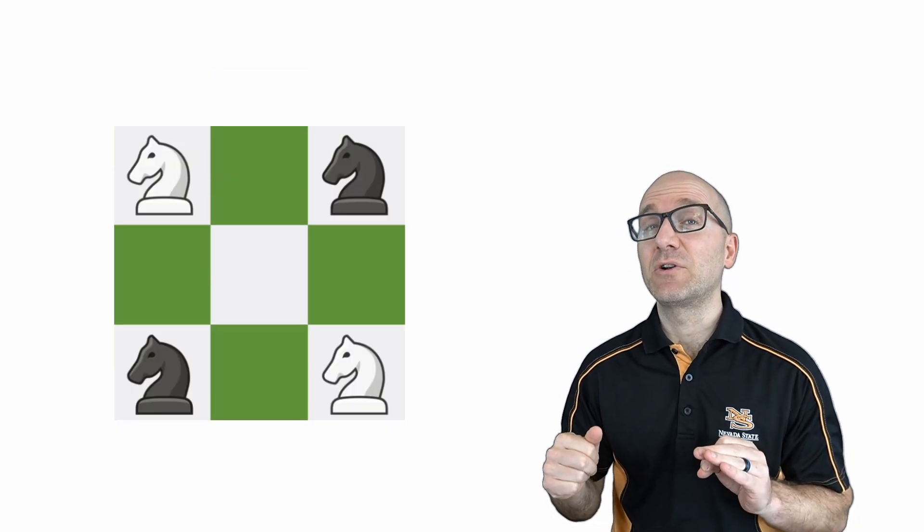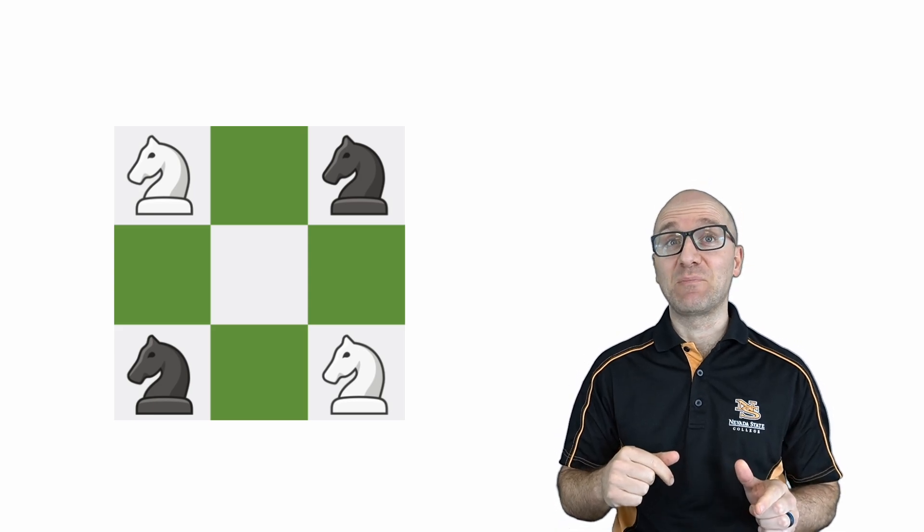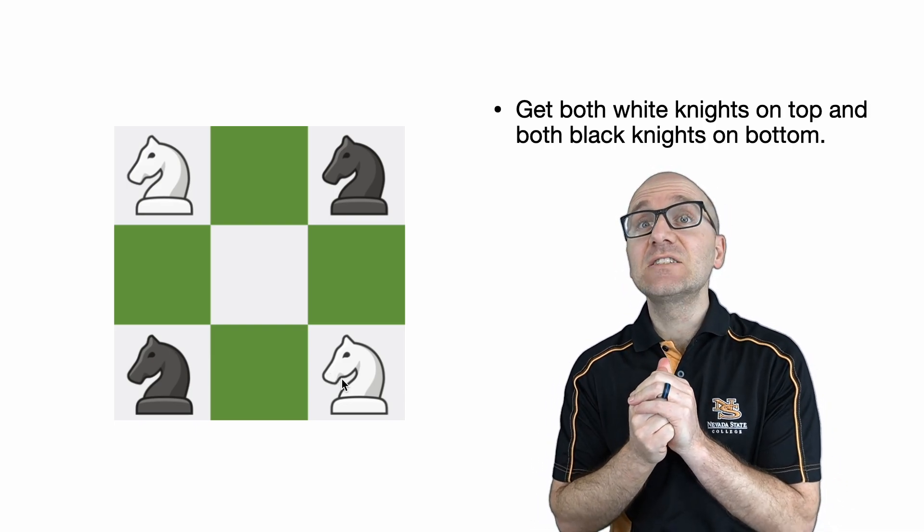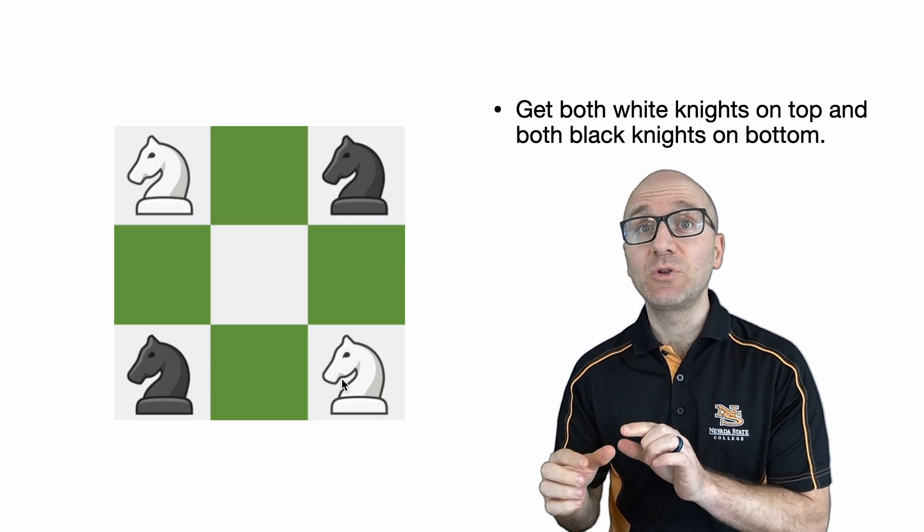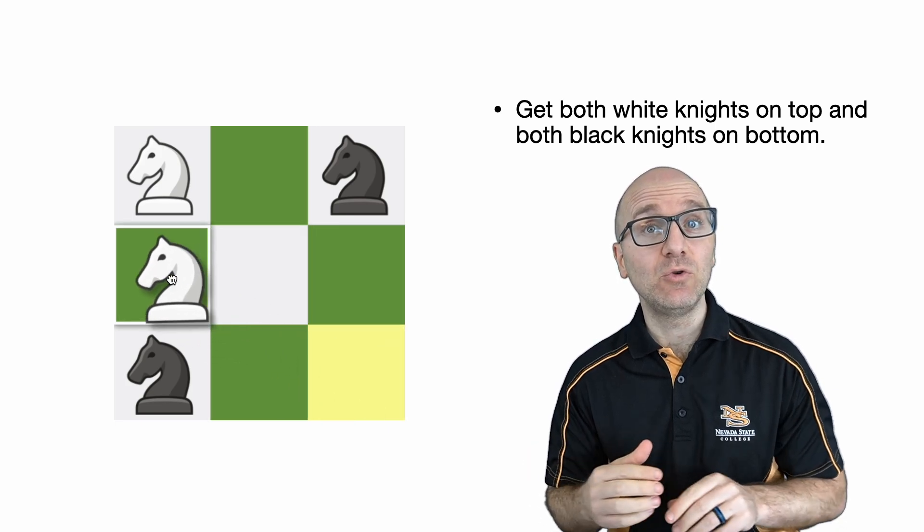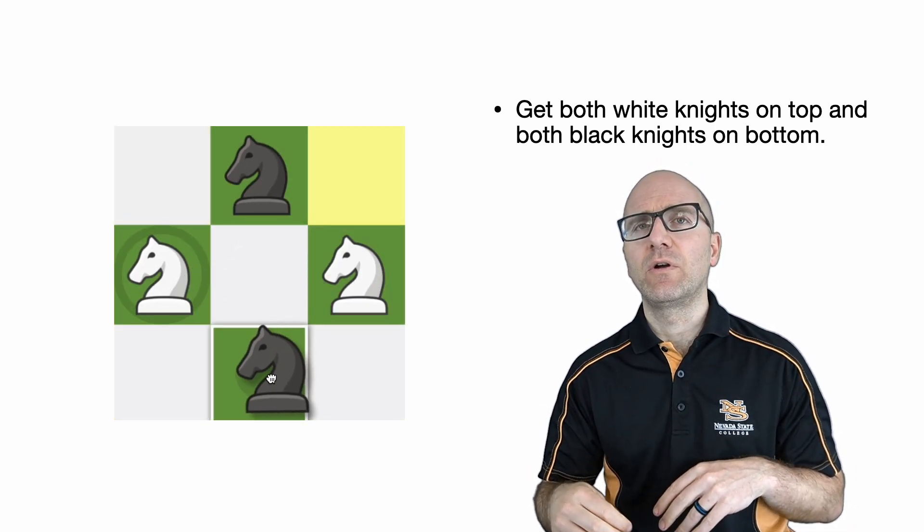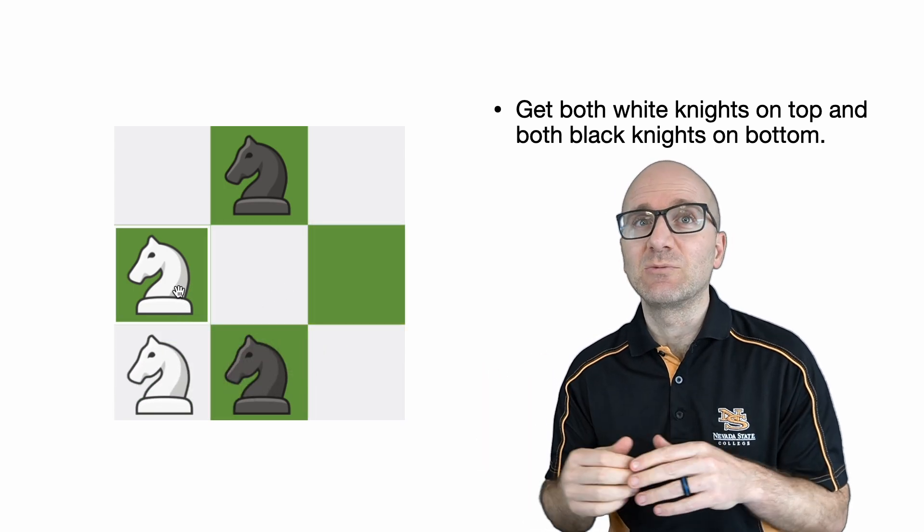This reminds me of a problem I encountered back in high school at a state math competition. In that problem, we were given a 3x3 chess board with white knights at opposite corners and black knights at opposite corners. The task was to move the knights so that the top two corners had white knights and the bottom two corners had black knights. And in this problem, it was okay for knights of the same color to move twice in a row. And it was also okay for the knights to threaten each other. It sounds easy enough, right?